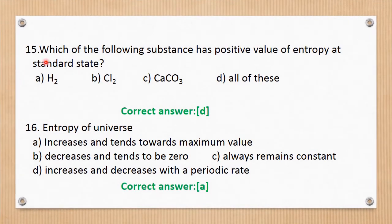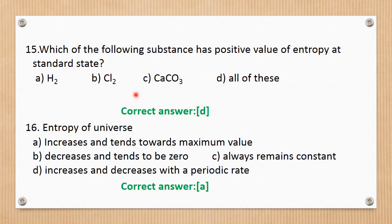Question number 15. Which of the following substances has positive entropy at standard state (25°C)? Options are: H2, Cl2, calcium carbonate, or all of these. At standard state, all substances have positive entropy. The correct answer is D — all of these.